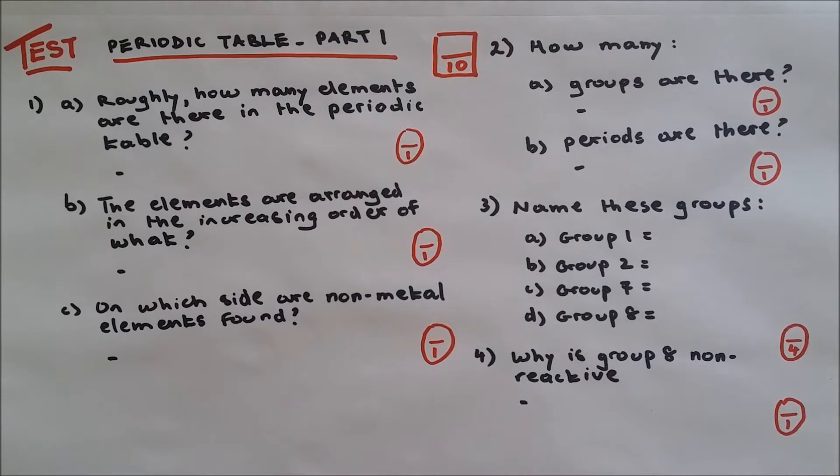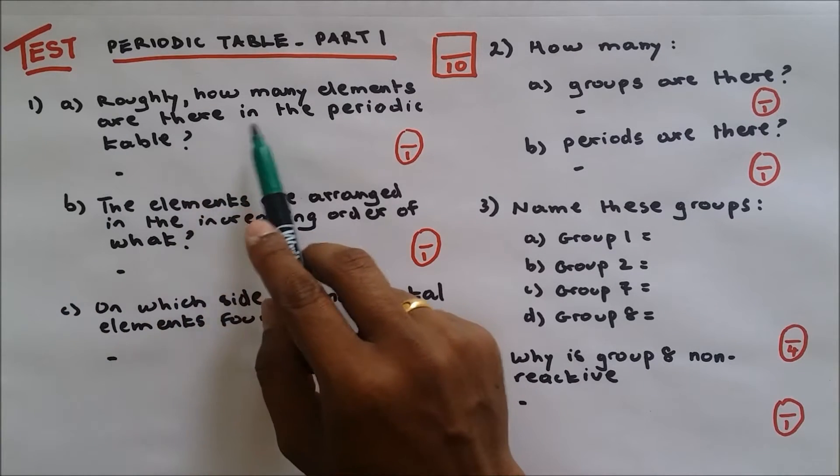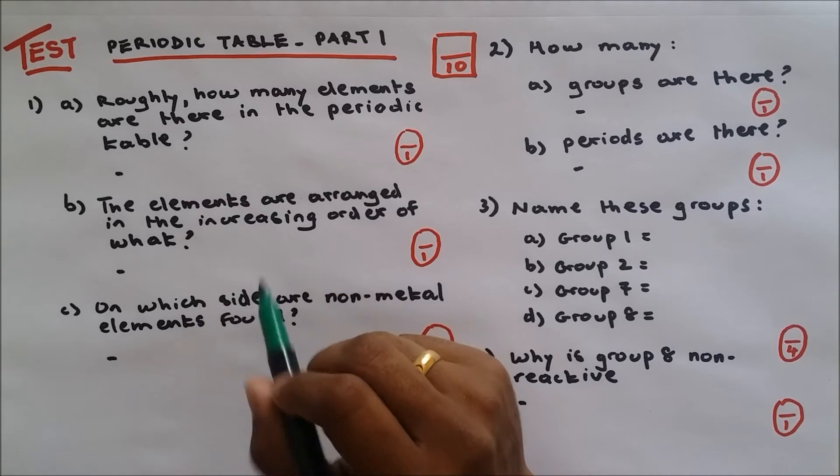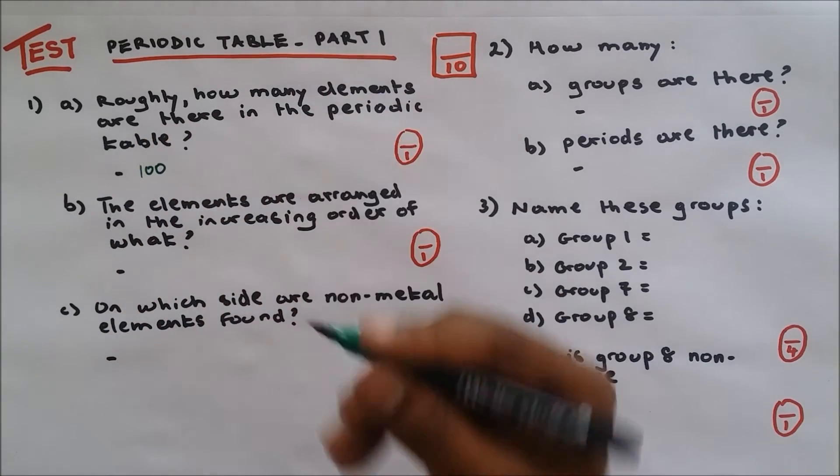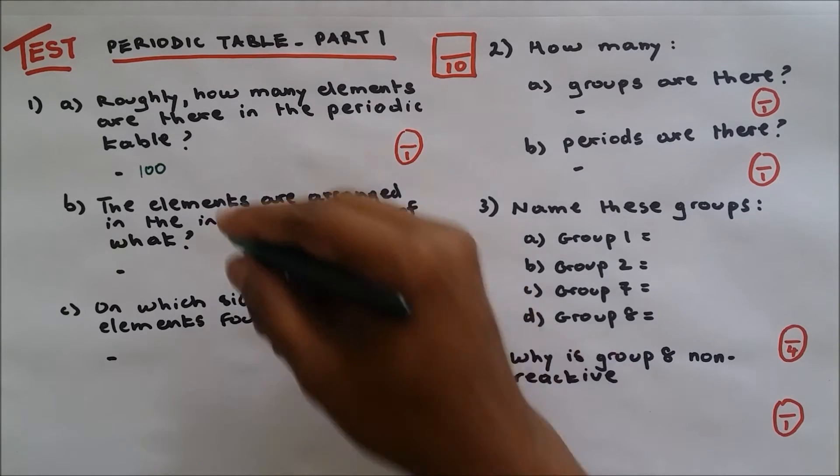Here we go. Question number one: roughly how many elements are there in the periodic table? Roughly there are, you can say, a hundred elements or 110 elements. Okay, so it's one out of one.